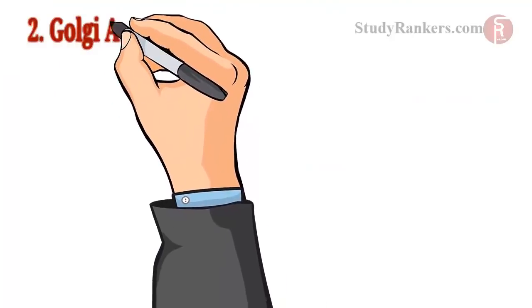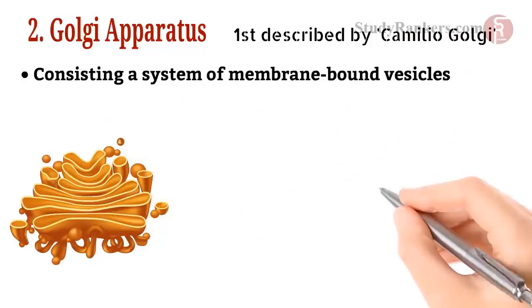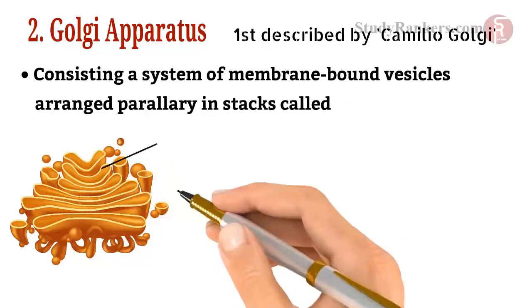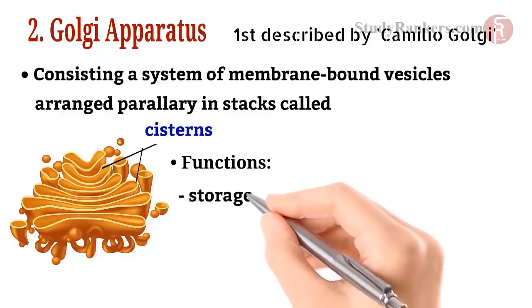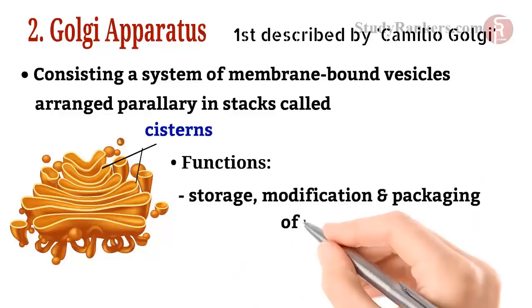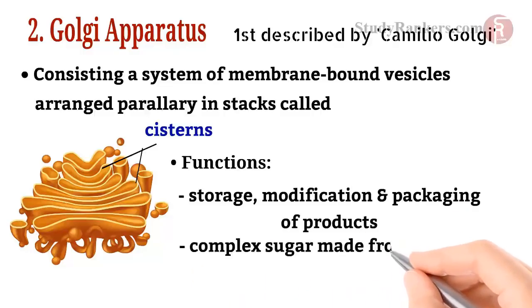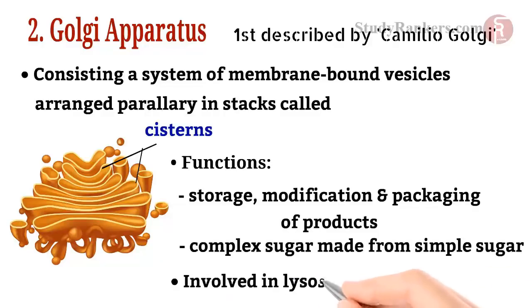The second cell organelle is the Golgi apparatus, first described by Camillo Golgi. The Golgi apparatus consists of a system of membrane-bound vesicles arranged approximately parallel to each other in a stack called cisterns. Its functions include the storage, modification, and packaging of products in vesicles. In some cases, complex sugars may be made from simple sugars in the Golgi apparatus. It is also involved in the formation of lysosomes.